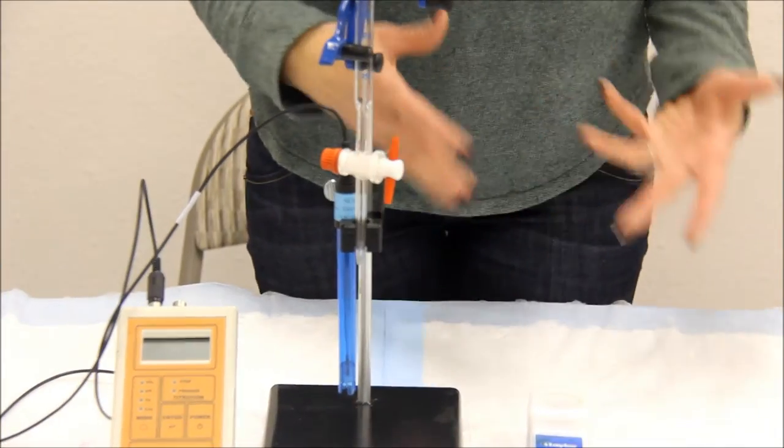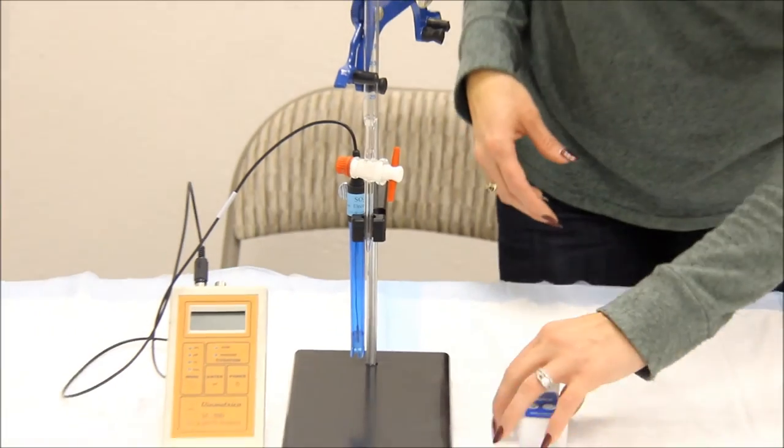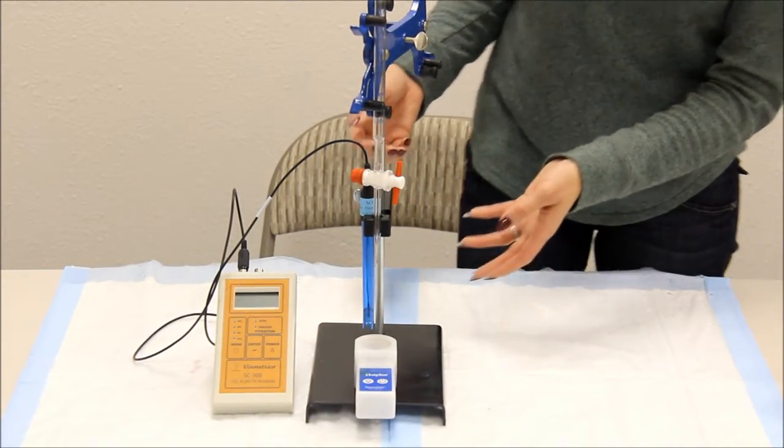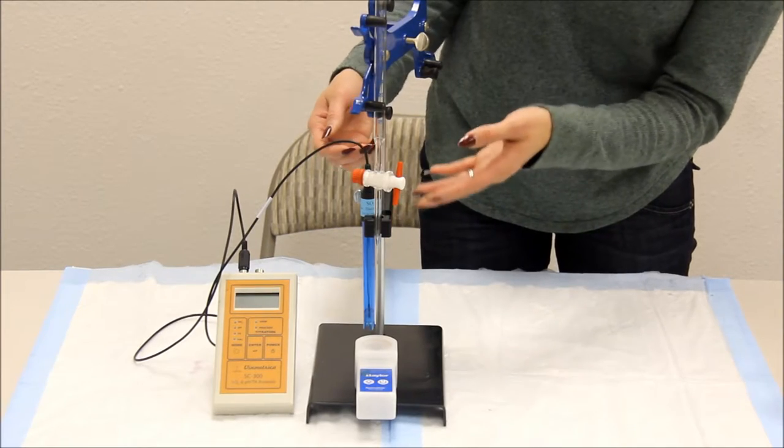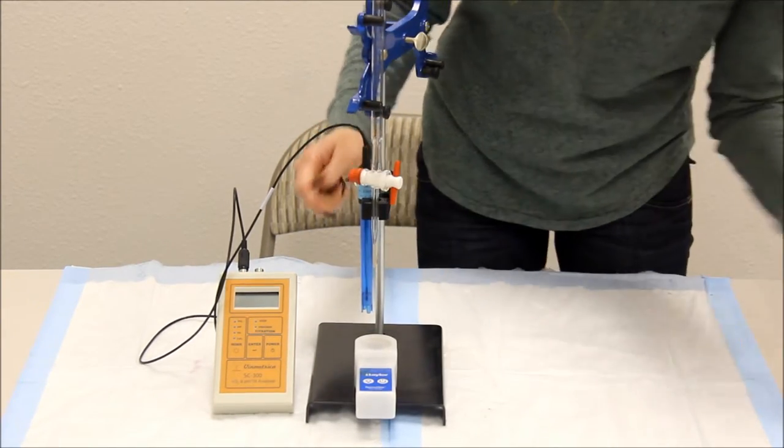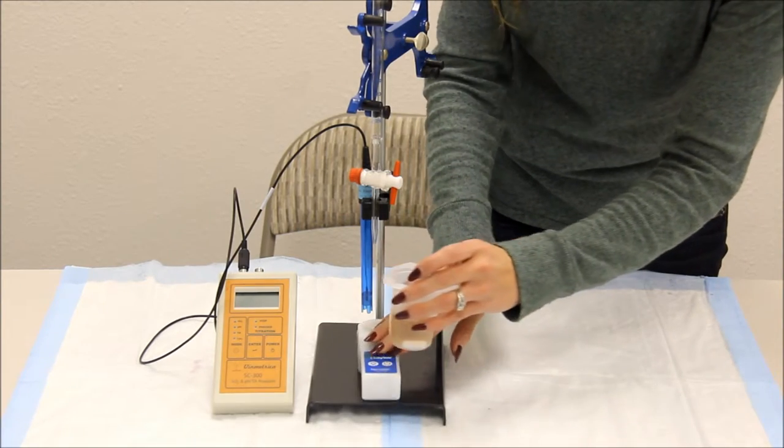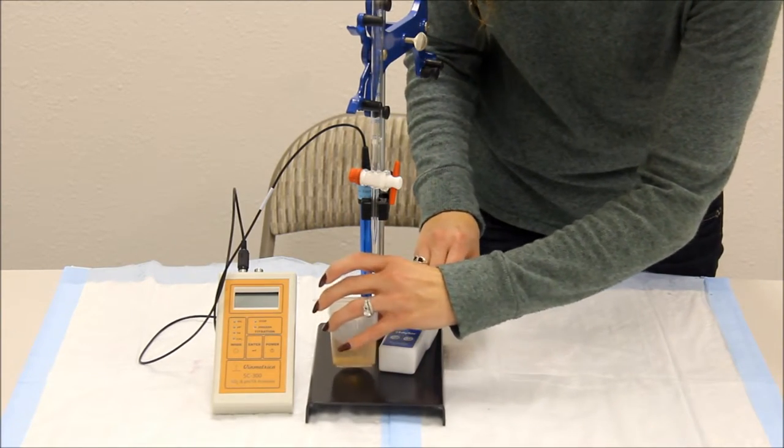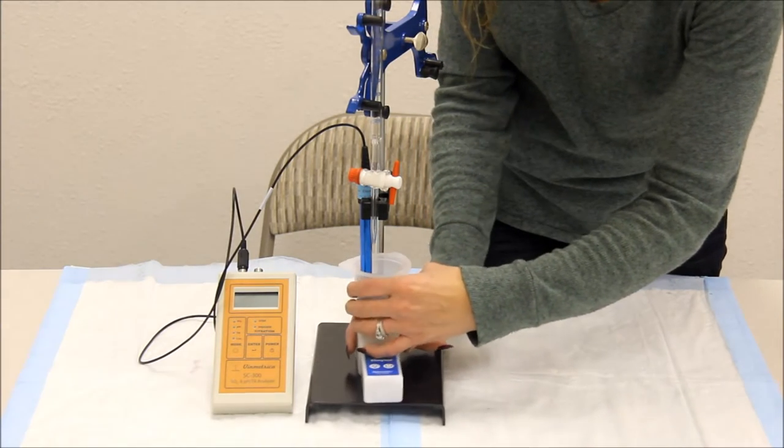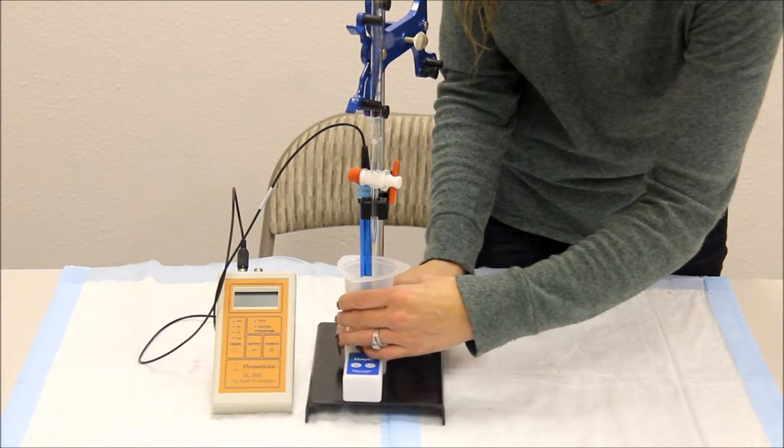You are now ready to add your wine samples. You may need to adjust the height of your electrode holder and burette clamp. Place your sample so the electrode sits at the back of the cup.